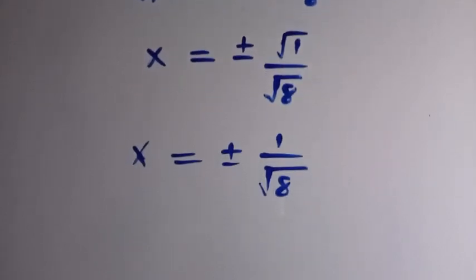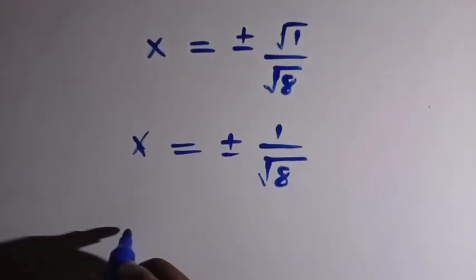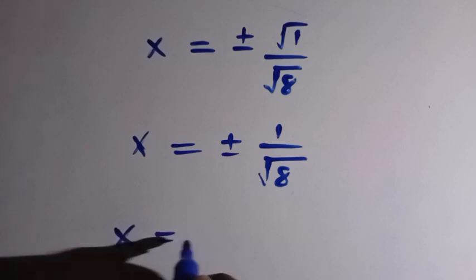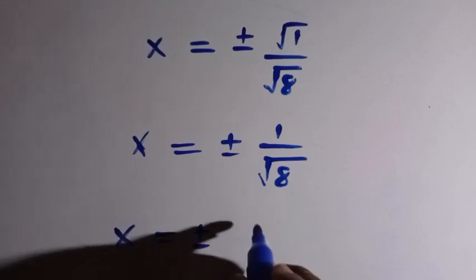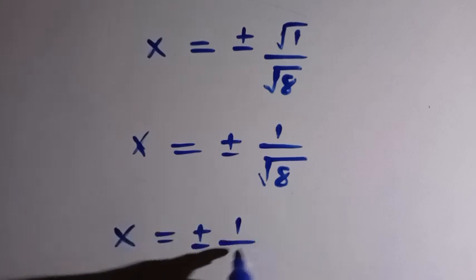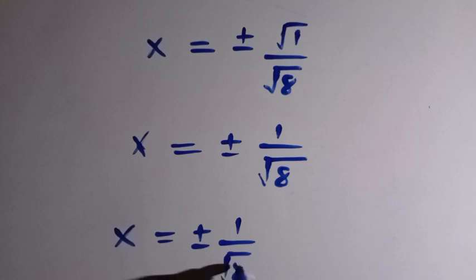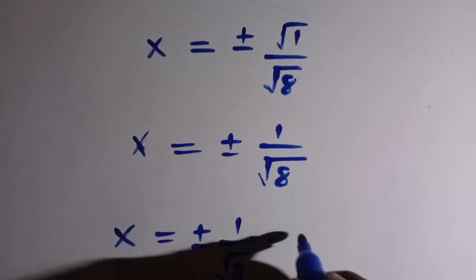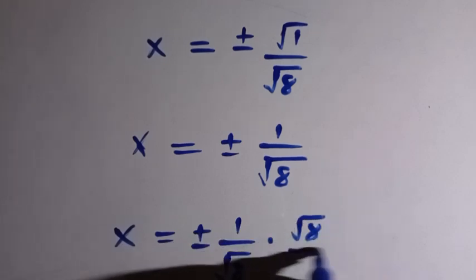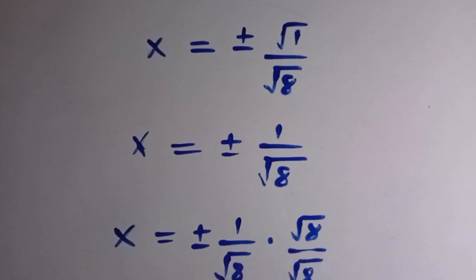Let me try and rationalize this side. Suppose we rationalize this, we are going to have x here equals plus or minus 1 divided by square root of 8 multiplied by square root of 8 divided by square root of 8.